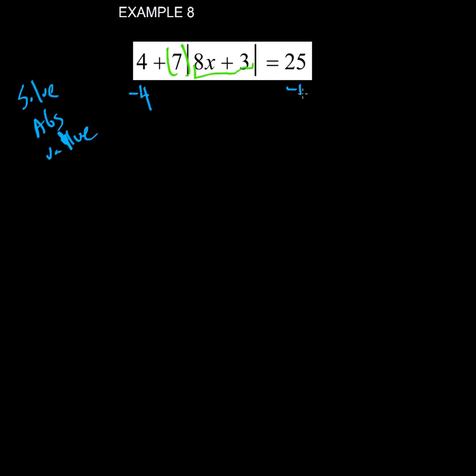Easiest one is the 4 because it's not being multiplied, so I minus it to both sides. Then I have 7 times the absolute value of 8x plus 3 equals 21. Now I have 7 times the absolute value, so I need to divide by 7 to both sides.